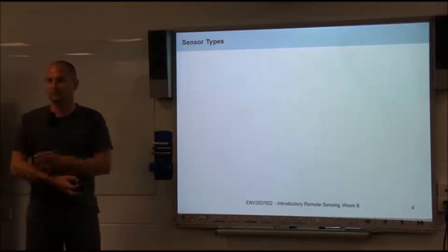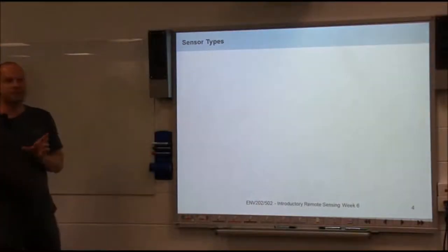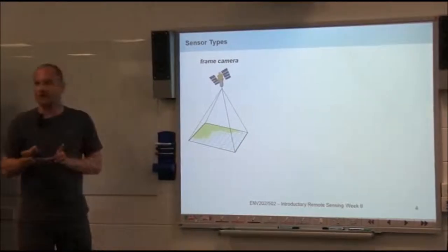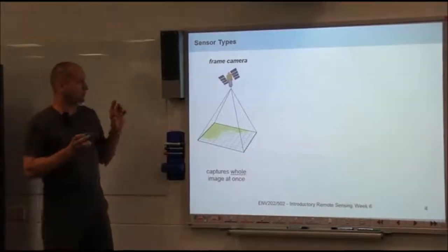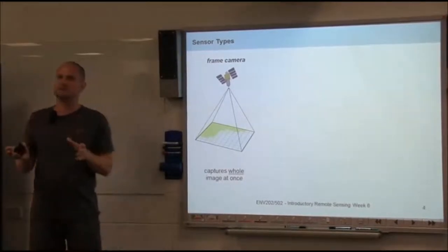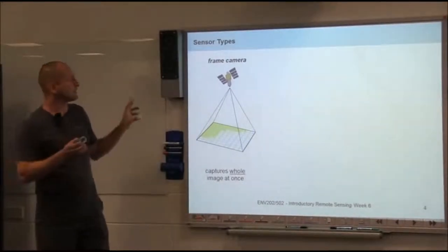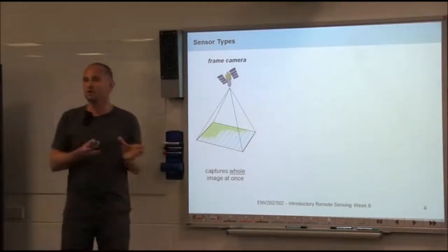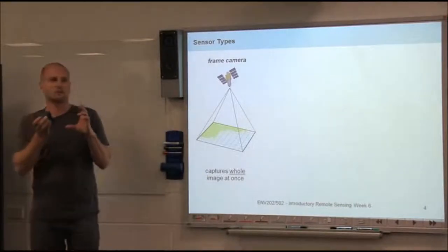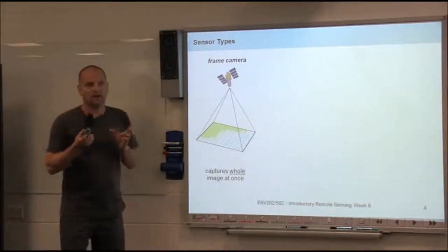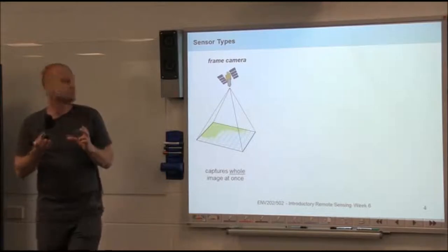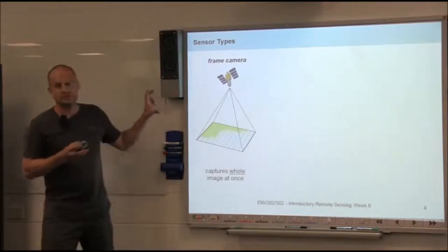Alright. Sensor types—this one's a bit more difficult. We basically have three different sensor types. The first one is a frame camera. The characteristic of a frame camera is it captures the whole image at once. This can be a digital system or an analog system. Just think about an old camera with film—it takes the whole image in one go. Modern digital cameras also take the whole frame in one go.